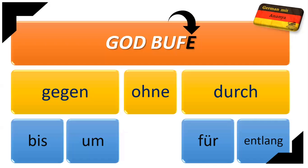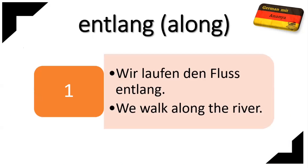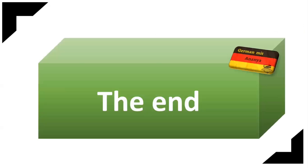The last preposition is E, which is entlang, and entlang means 'along.' For example: 'Wir laufen den Fluss entlang' — We walk along the river. These are the important accusative prepositions — there are only seven in total. Learn them and try to use them in your sentences. If you like this video, please like, subscribe, and share. See you and bye!